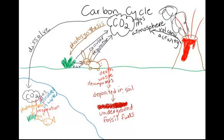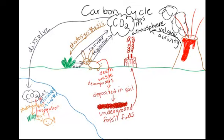Not only does burning sugar provide energy for our bodies, but we can burn molecules that have carbon in them in our factories and our cars, and use that for energy to provide electricity and make our cars go. So we're going to put a connection between underground fossil fuels and humans. I'm going to draw a little factory with a smokestack. We take those fossil fuels from under the ground — we dig them up, we drill for them, we pull them out — and we burn them. When we burn things, that sends carbon dioxide back into our atmosphere. Let's make a little car next to our factory.